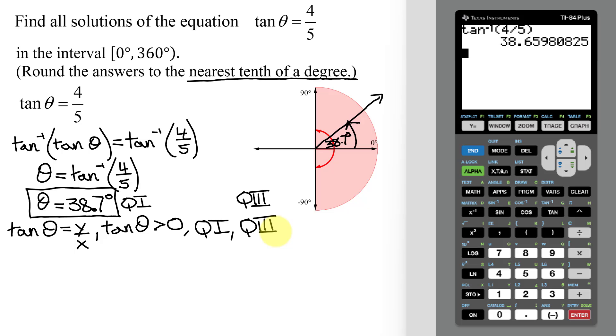Now I've already found the answer in quadrant one. I need to find the answer in quadrant three. And to do that, I'm going to use reference angles. But initially, I need to draw my angle down here in quadrant three. So here's my angle in quadrant three. I'm going to call it theta sub two. And remember, the reference angle is the acute angle the terminal side makes with the x-axis. So this is the reference angle theta prime for my angle in quadrant three.